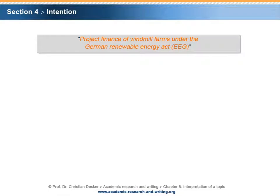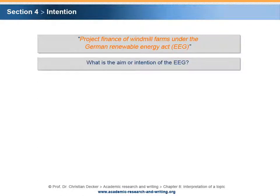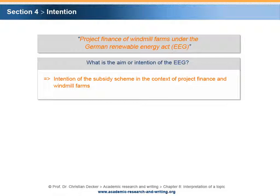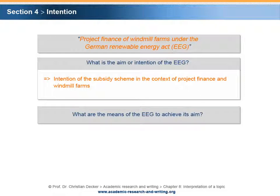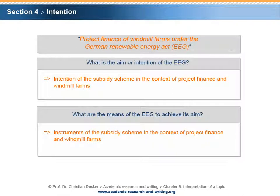With regard to our topic — project finance of windmill farms under the Renewable Energy Act — we could raise the following questions. What is the aim or intention of the EEG? This question implies an analysis of the intention of the subsidy scheme in the context of project finance and windmill farms. Another question is: what are the means of the EEG to achieve its aim? This implies an analysis of the instruments of the subsidy scheme in the context of project finance and windmill farms.